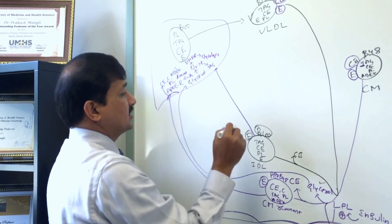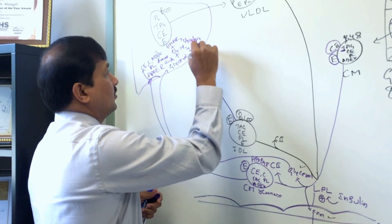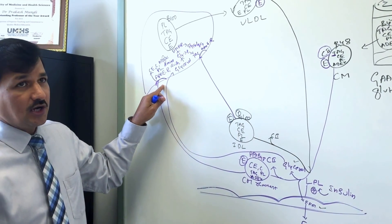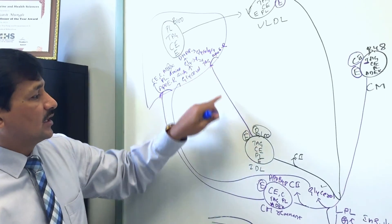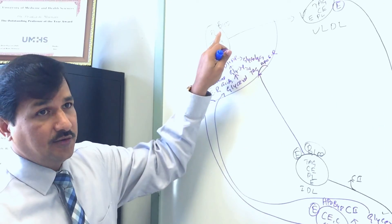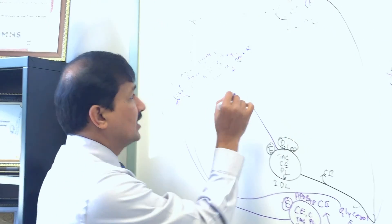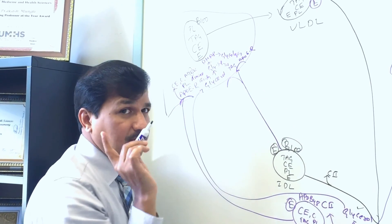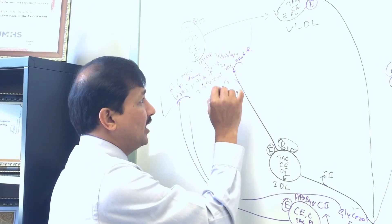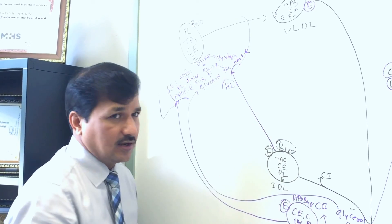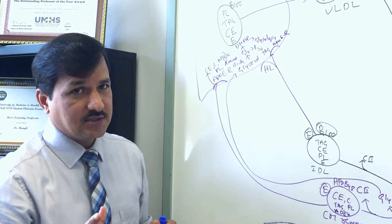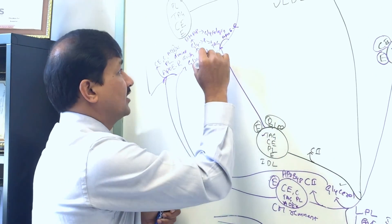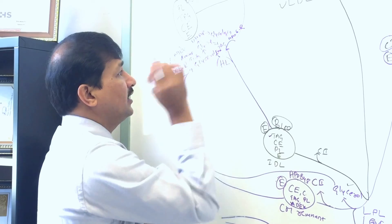IDL has three fates. The first fate is that IDL can be taken up by the liver via the ApoE receptor — also called the remnant receptor — very similar to what we saw for chylomicron remnants. The same remnant receptors can take up IDL, and all its contents go to the liver. The second fate is that IDL can pass through the sinusoids of the hepatocyte membrane.